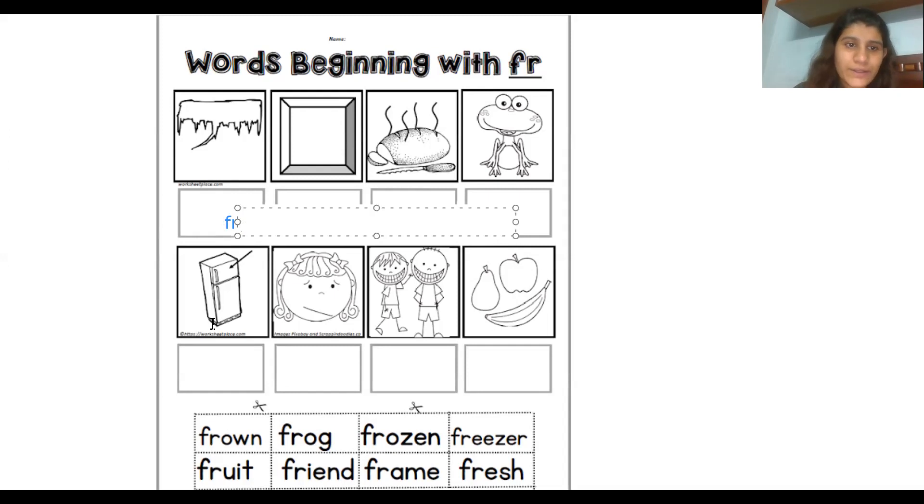This is how you will do this worksheet. In the next worksheet you have different words here. You have to guess which word. So what is it? This looks a little like baraf. So I will write what is baraf. What is baraf? Jamiwi is frozen. So I will write frozen here. Then, in here, what is this? This is a fridge and here is freezer. This is freezer. So I will write freezer here and guess the word. The words that are done, I will tick mark them so that I don't get confused. This is how you will do this worksheet.